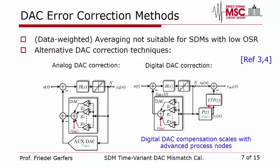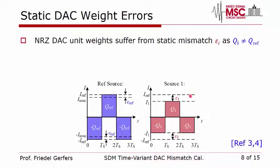This is already state-of-the-art. In a continuous-time Sigma-Delta modulator we are interested in the total charge per clock cycle, meaning the total area injected in the feedback loop. Looking at the different unit cells, we can see they deviate from each other — the actual current amplitude varies from cell to cell, introducing an error such as epsilon_1. These errors cause nonlinearity, which is what state-of-the-art correction addresses.